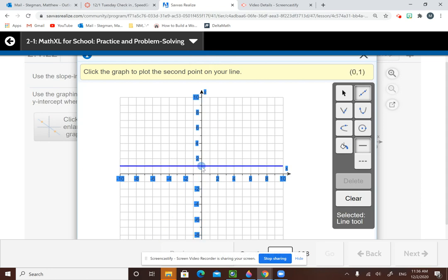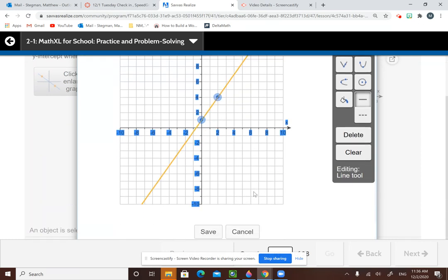To find the next point, we start at the y-intercept. The top number is the number that we go up. The bottom number is how many we go over. So I go up 3, over 2. I get my next point.